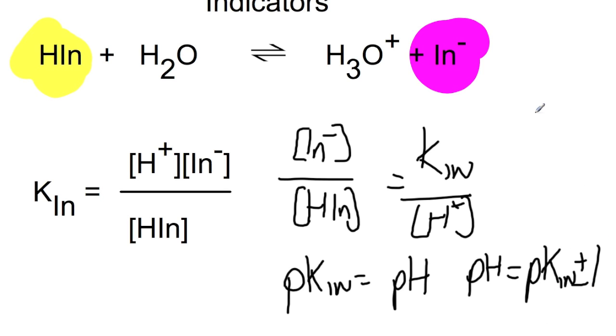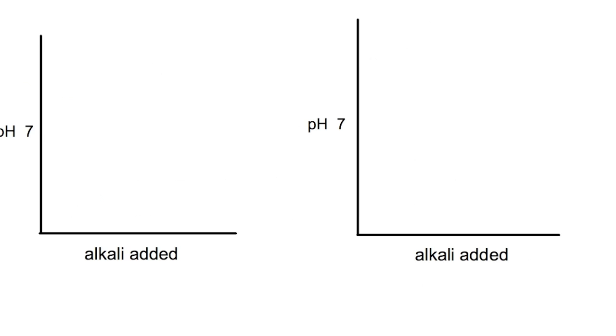If you have a look at page 20 in your data book, there is a range of indicators and their pH color changes. To be able to use an indicator, you need to be able to know where the end point of your titration is. The end point of the titration is where the pH changes rapidly. This is the point where you want your pH change of your indicator to lie.